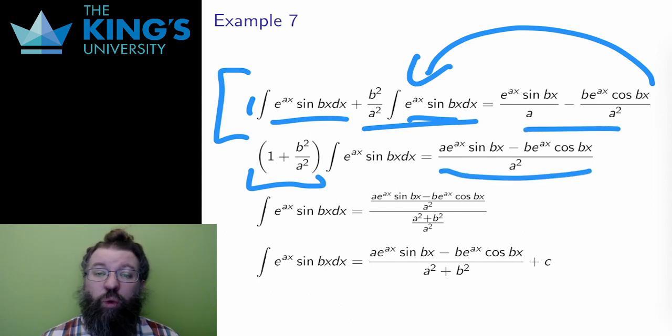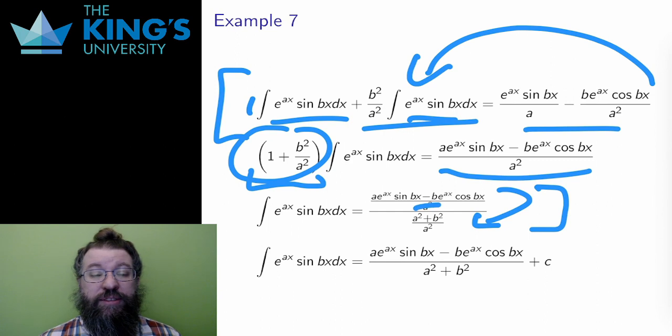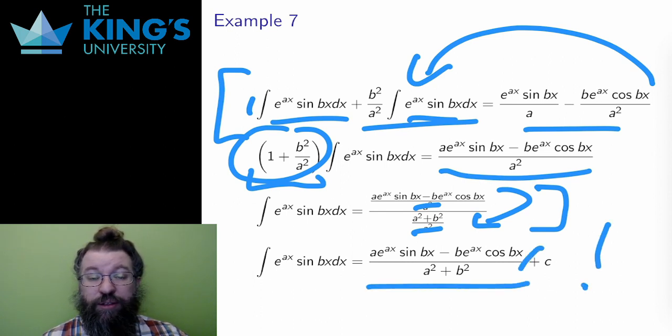Well, then I'll divide by one plus b squared over a squared. I then have to simplify the nested fraction on the right, but this is actually pretty good since the a terms just cancel, leaving a squared plus b squared in the denominator. And the result is an expression for the integral.